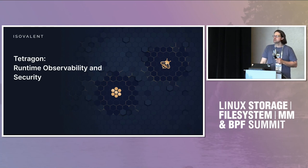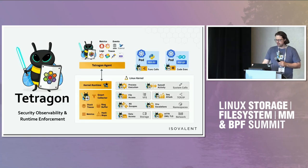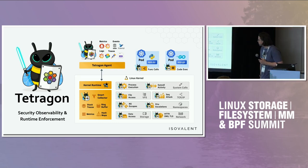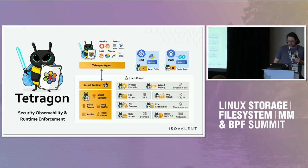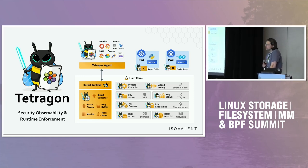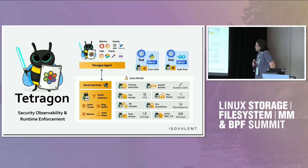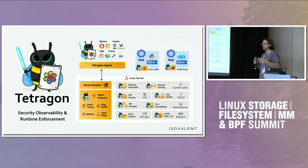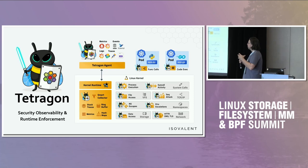Tetragon is a runtime observability and security tool that we wrote. We developed this about three years ago, maybe even a little bit longer. And then we open sourced it last year. If you think about the Cilium project, we have the CNI which does all the networking, routing, and load balancing.